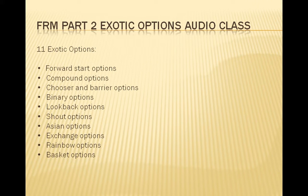Asian options have a payoff profile based on the average price of the security over the life of the option. Average price calls and puts pay off the difference between the average stock price and the strike price, meaning Asian options are priced lower than comparable standard options. Average strike options pay off the difference between the stock's expiration price and its average price over the option's life. If the average is based on a geometric average, standard pricing models apply since geometric averages are log-normal; however, most Asian options use arithmetic averages, which complicates the pricing process.